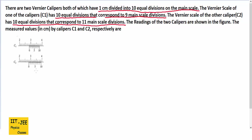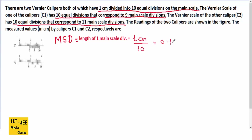First I am going to find the MSD — the length of 1 main scale division. Both vernier calipers have 1 cm divided into 10 equal divisions on the main scale, so 10 divisions equals 1 cm. The length of 1 division is 1 cm divided by 10, which gives us 0.1 cm. So MSD equals 0.1 cm.